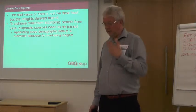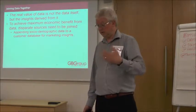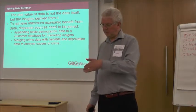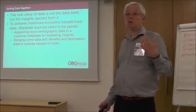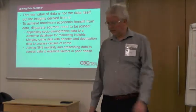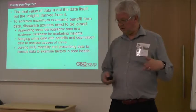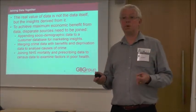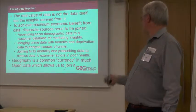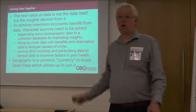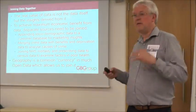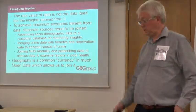For example, appending socio-demographic data to a marketing database to gain insights — typically at postcode level. Merging crime data with benefits and deprivation data to look at underlying causes of crime. Joining NHS and prescribing data to census data to look at factors underlying poor health. The main message I want to bring across today is that geography is the common currency in much open data. Location — even though it might not be obvious how it's location-based — there is often some locational element, and that allows us to join data sets together.